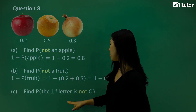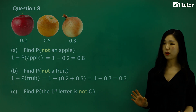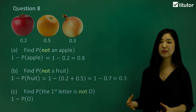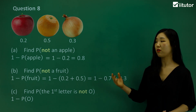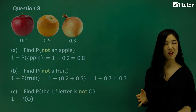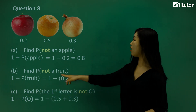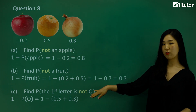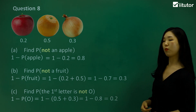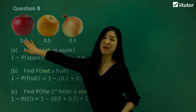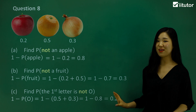Find the probability that the first letter is not O. We have to do 1 minus the probability of the first letter being O. Orange begins with an O and onion starts with an O, so those two are the ones we subtract from 1. So 1 minus the probability of orange (0.5) and onion (0.3) added together. 0.5 plus 0.3 is 0.8, and 1 minus 0.8 is 0.2. I want you to understand this complementary event rule for probability.